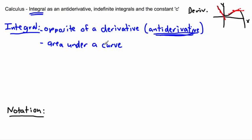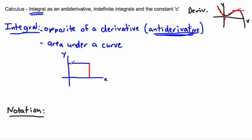The area under a curve is pretty easy in some cases. For example, if we're trying to find the area under a graph that's a straight line, well, the area under that curve is actually really easy — all you'd have to do is find the area of the triangle. No problem there.